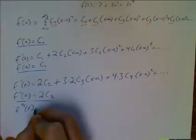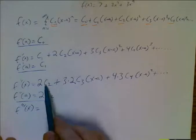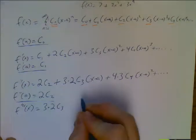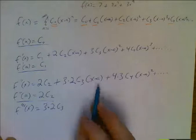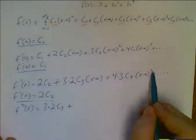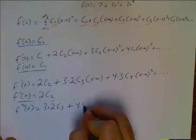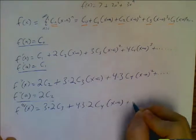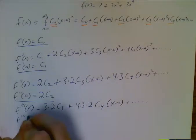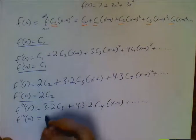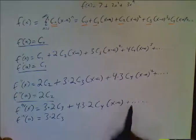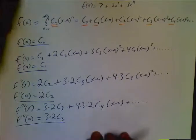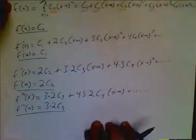Oops, f triple prime of x. All right, zero plus three times two c three. Three times two c three. The x minus a gets taken care of, plus two times four times three, or four times three times two. Same thing. c four, x minus a to the first, plus dot, dot, dot. And f triple prime of a, of course, is just the three times two c three term. This term and all the rest of the terms go to zero. And maybe you can see the pattern now, but you know what? Just to be totally sure, we're going to go one more time. Just to be totally sure.